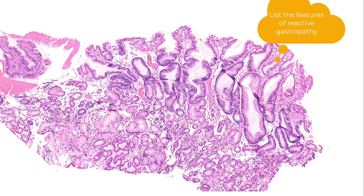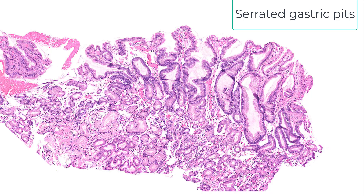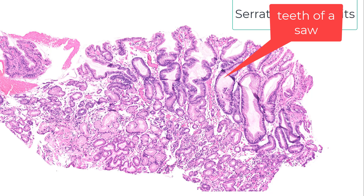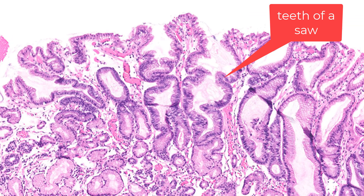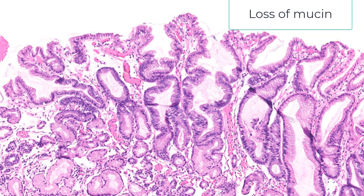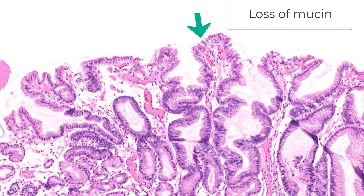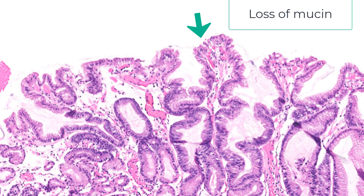Let's list the features. Feature number one is the serrated profile — notice these saw-tooth-like profiles. Feature number two is loss of mucin; those apical cups of mucin have virtually disappeared.